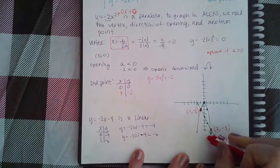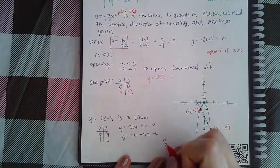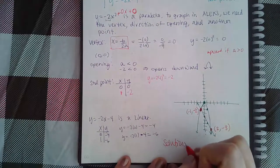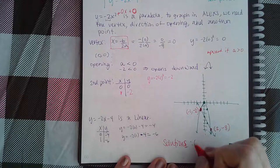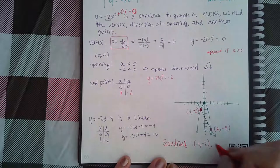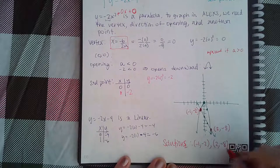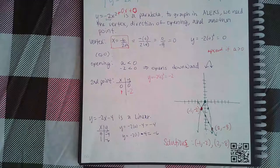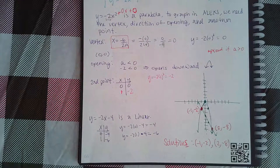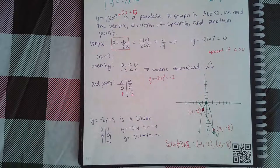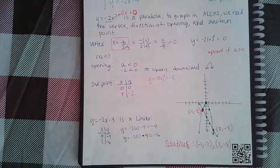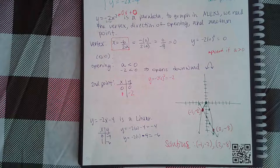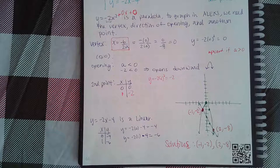So when you go to write your answers, you're actually going to have two answers. So my solutions, with an s, are going to be (-1, -2) and (2, -8). Okay, so you will need to be able to eyeball where the two things are intersecting, and they actually intersect twice. Both of these points are the solutions to that system of equations.